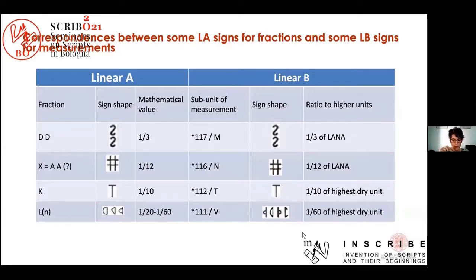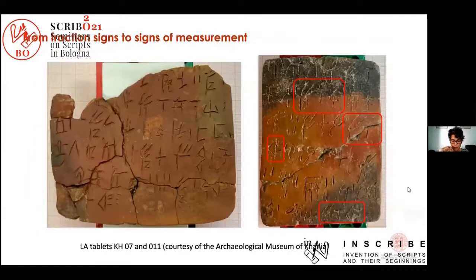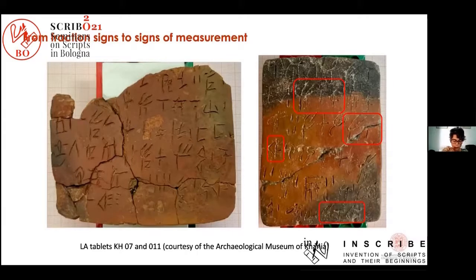Let's now try to imagine how the adaptation may have taken place. These measures were implicit in Linear A commodity logograms, so were implicit in both Linear A and Linear B commodity logograms. And some of them, in Linear A, were ligatured with fractional signs.